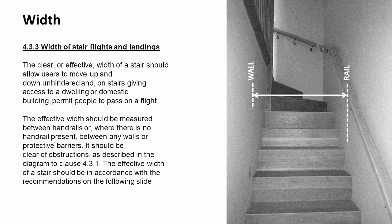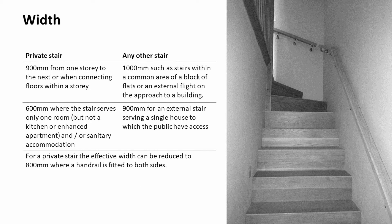The width of a stair is important, and we talk about the clear width or effective width. It should be wide enough for users to move up and down unhindered. For stairs giving access to a dwelling or domestic building such as a block of flats, people should be able to pass on that flight. The effective width is measured between handrails. For a private stair, we're generally looking for an effective width of 900mm from one storey to the next, or 600mm if it's serving only one room such as a loft bedroom. If there's a handrail on both sides, the effective width can be reduced to 800mm.